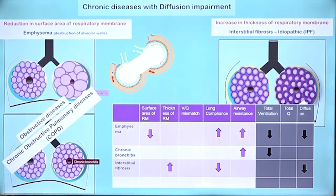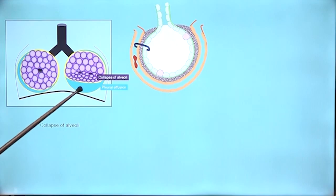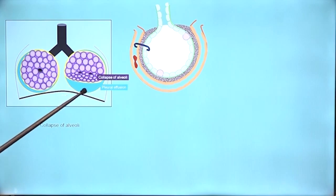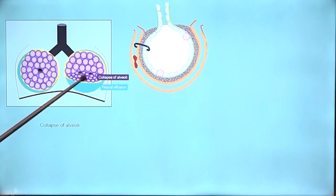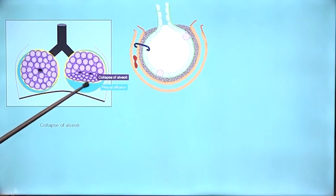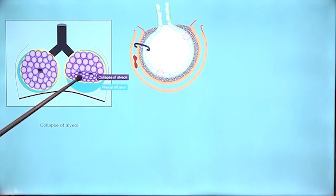Let us look at some acute conditions where there can be diffusion impairment. In pleural effusion — say tuberculous pleural effusion — if there is fluid in the pleural space, the alveoli in that area would collapse, because a negative intrapleural pressure is important to keep the alveoli expanded. If the pleural space is filled with fluid or even air as in a pneumothorax, alveoli would collapse. When alveoli collapse there is reduction in surface area available for gas exchange, which amounts to diffusion impairment.